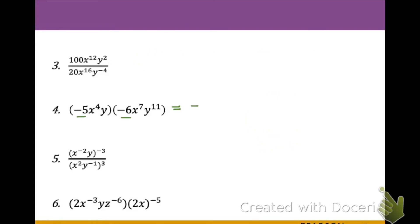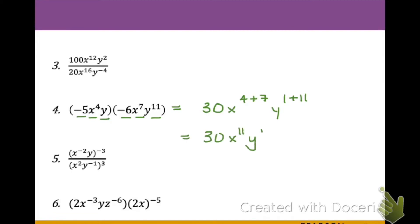In the next example, we multiply term by term. Negative 5 times negative 6 gives positive 30. For x: x to the 4th times x to the 7th — adding exponents gives x to the 11th. For y: y to the 1st (even though not explicitly written) times y to the 11th — adding gives y to the 12th. So the result is 30x to the 11th, y to the 12th.